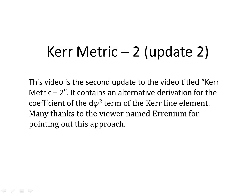This video is the second update to the video titled Kerr Metric 2. It contains an alternative derivation for the coefficient of the d phi squared term of the Kerr line element. Many thanks go to the viewer named Arrhenium for pointing out this approach, as in making the previous video I used an approximation, whereas this viewer has very cannily pointed out that an exact way of finding this coefficient can be found.